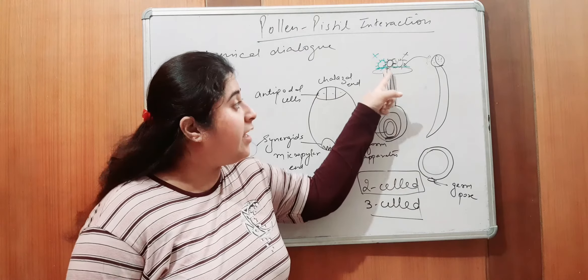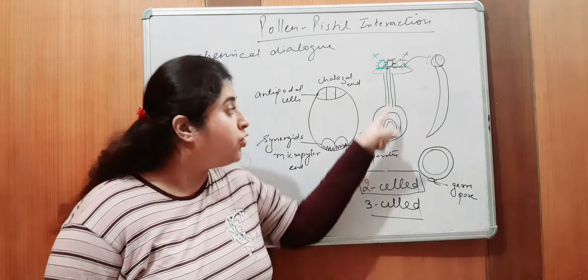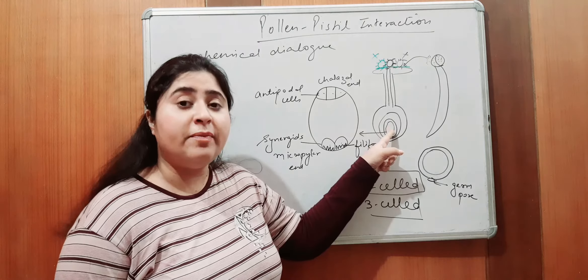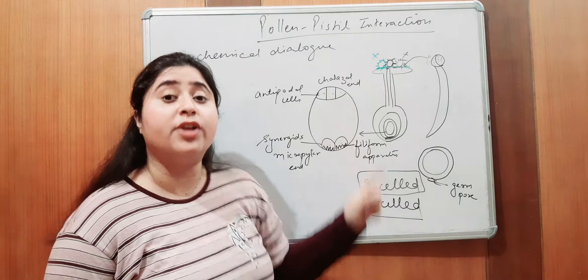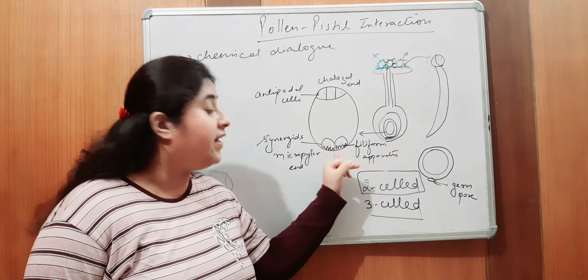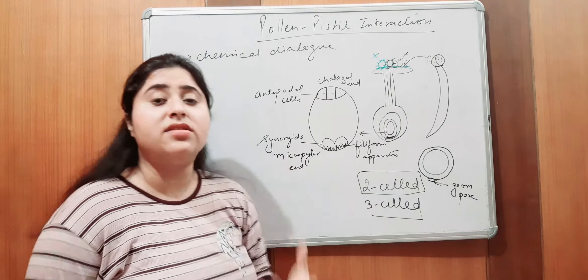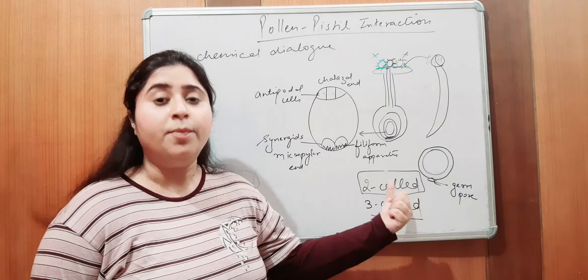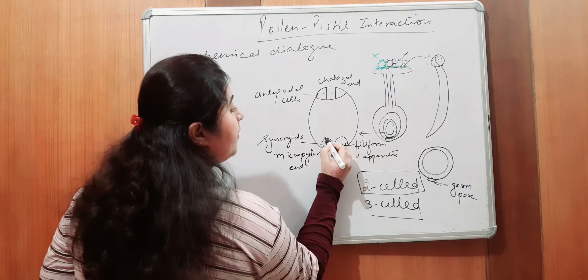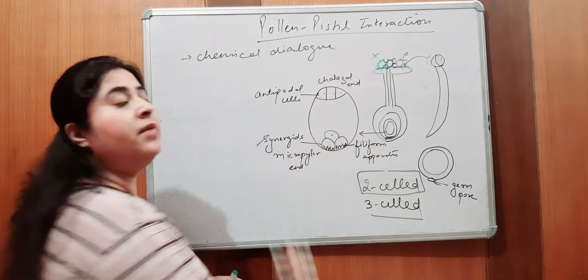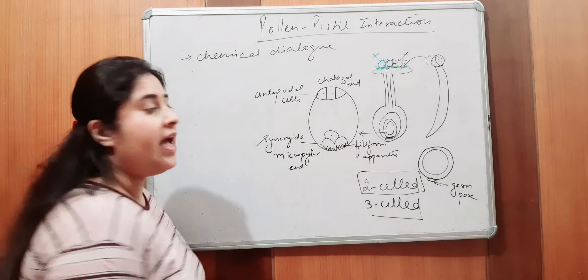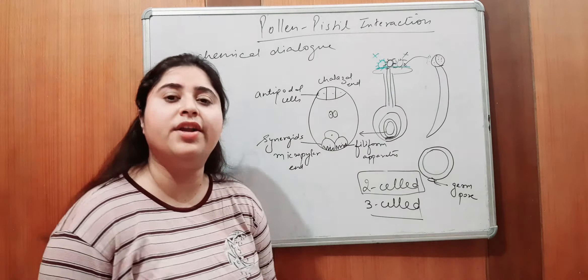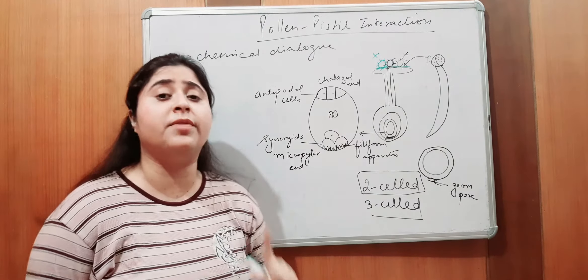Pollen tube ban gai hai. Male gametes enter ho gai hai in three-celled condition. Toh woh jab aaget jayenge, ovule ke andar enter karne ke baad, jab ye female gametophyte, embryo sac mein enter karenge, toh kahaan se enter karenge? Micropylar end se enter karenge. Raasta koon batata hai? Who will guide them? Filiform apparatus will guide them. Please do understand this. Toh, synergids ke saath, yaha pe eek or cell present hota hai, which is egg cell, aur eek tino ko hum collectively call them egg apparatus. And there is also the presence of one fused nuclei in the central cell, which are regarded as the polar nuclei.